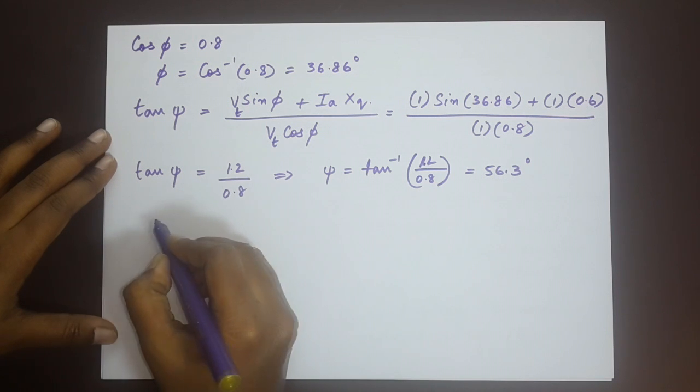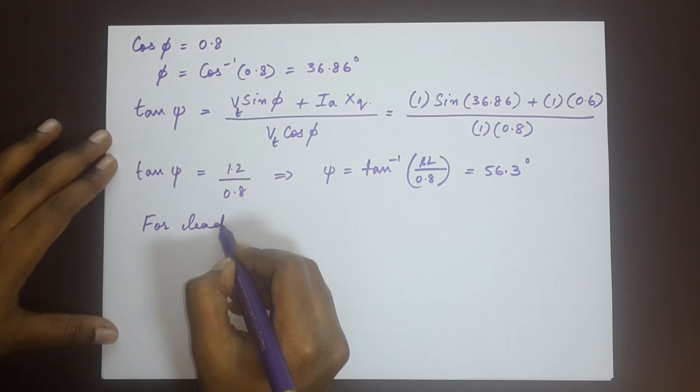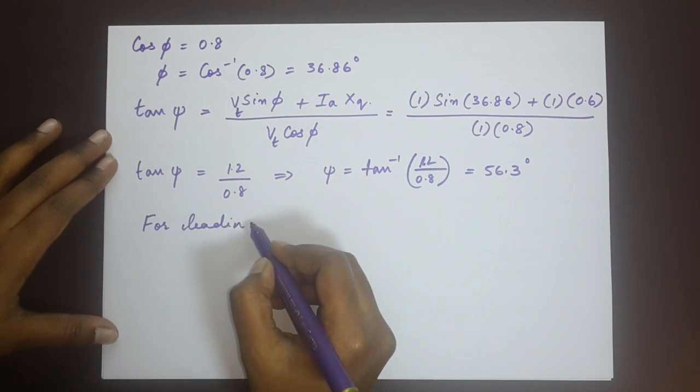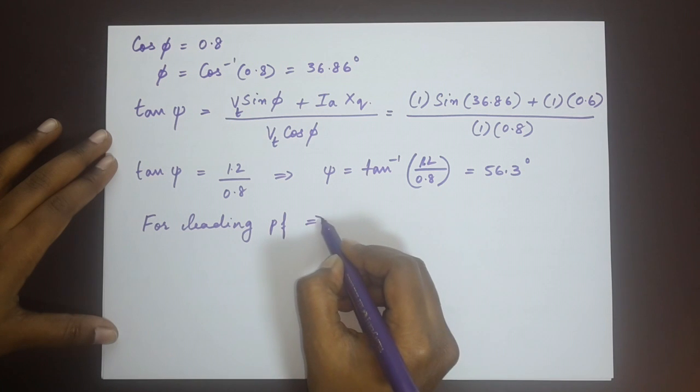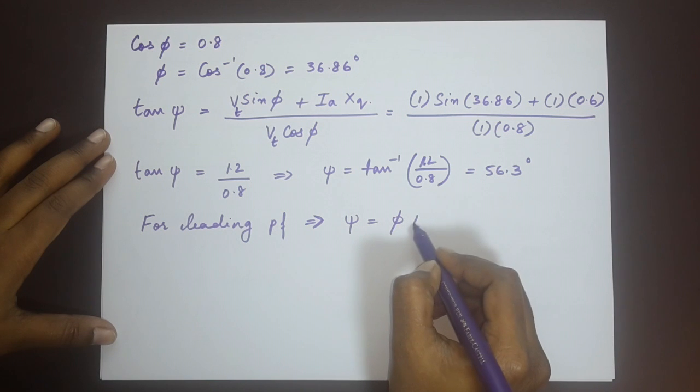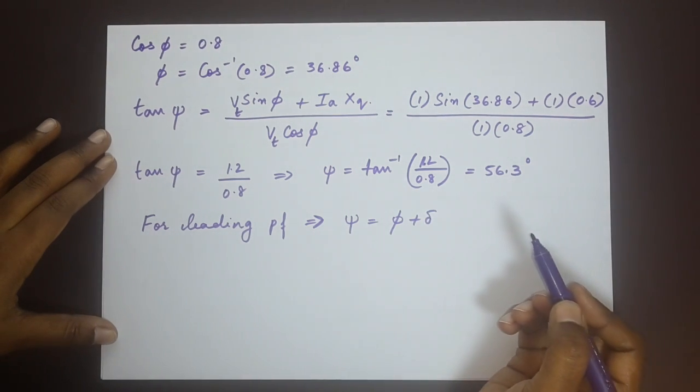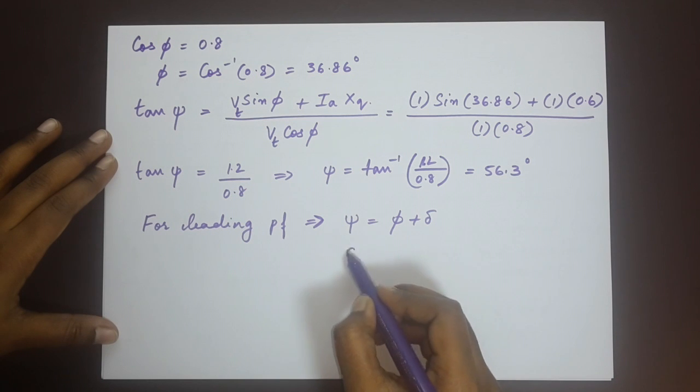Now for leading power factor, the question mentions that it is power factor 0.8 leading. So for leading power factor, the relationship between all the three angles is psi is equal to phi plus delta. We know the values of psi and phi, we can easily find what delta is.